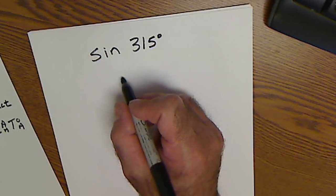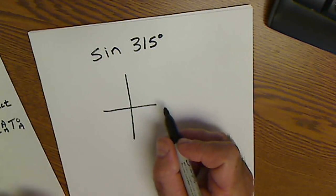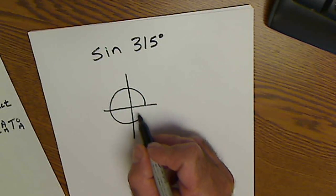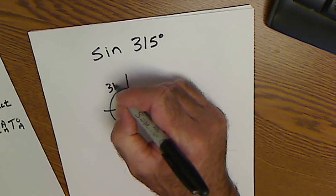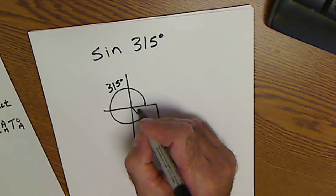Sine of 315. Draw my angle theta into the fourth quadrant, so angle 315. Step 2, reference angle.